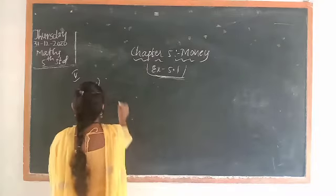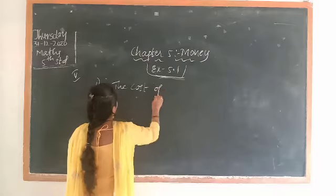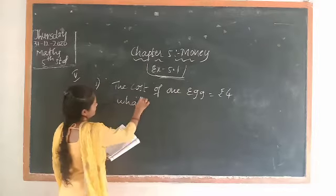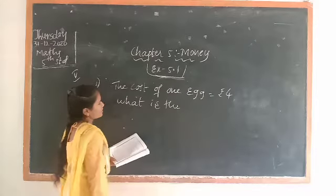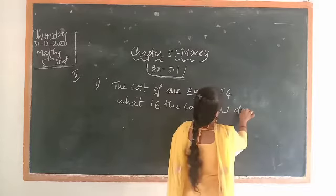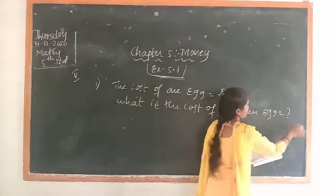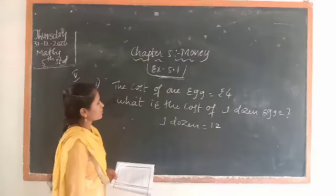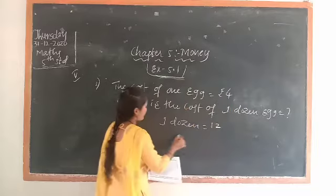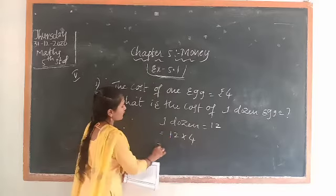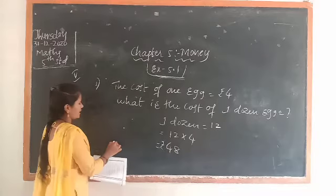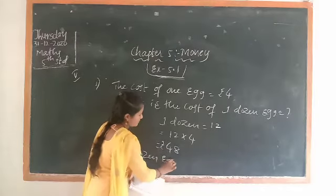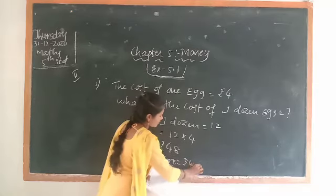Take the first question. The cost of 1 egg is equal to rupee 4. Find the cost of 1 dozen eggs. 1 dozen is equal to 12. There is the value of 1 egg — how much? 4. So you have to multiply 12 into 4. You will get the value: the cost of 1 dozen eggs is equal to rupee 48.